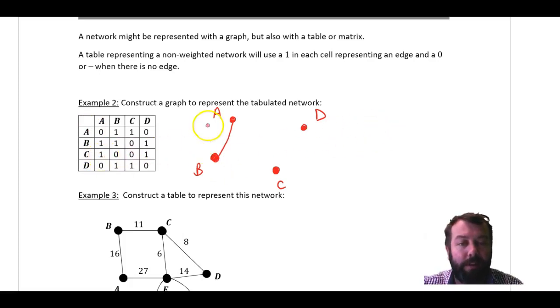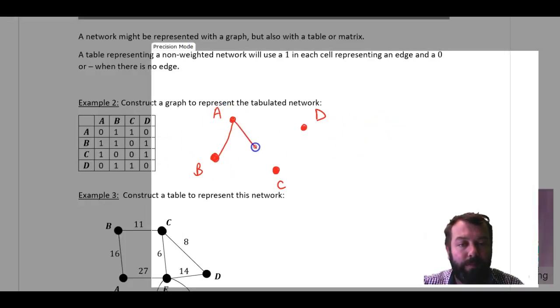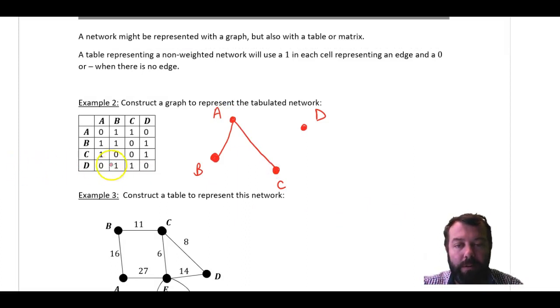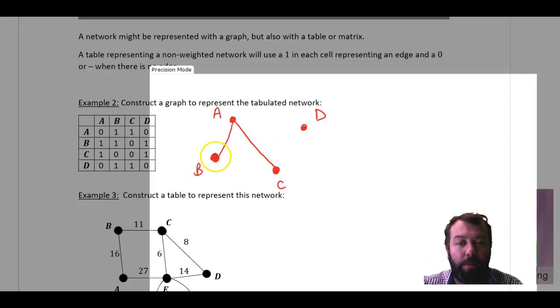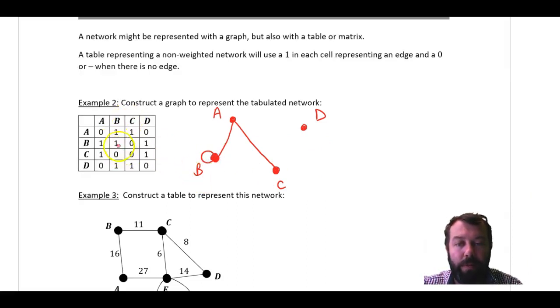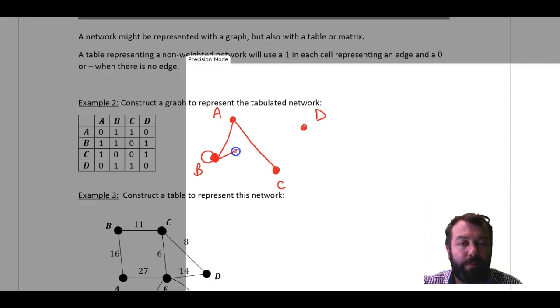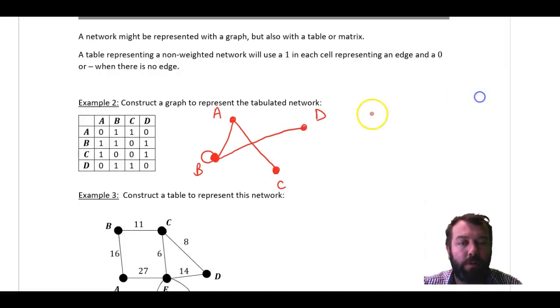There is also an edge from A to C, but it says there's no edge from A to D. Now, from B to A, there is an edge, but we've already done that one. From B to B, it says there's a one, so I must have a loop here at B. Okay, there's my loop, B to B. Nothing from B to C, but there is from B to D. So I'll draw that edge in there.